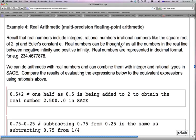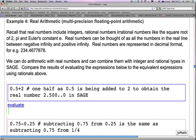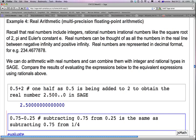Compare the results of evaluating the expressions below to the equivalent expressions using rationals above. So, early on, we added 1 over 2 plus 2. Instead of adding 1 over 2 plus 2, now we add 0.5 to 2, and then we get 2.5.